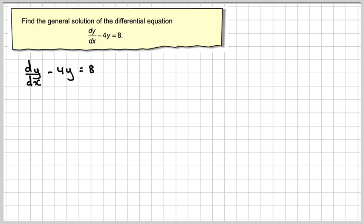Okay, first look, this looks a little bit tricky because we've got minus 4y here and an 8, so how do we actually separate the variables here?